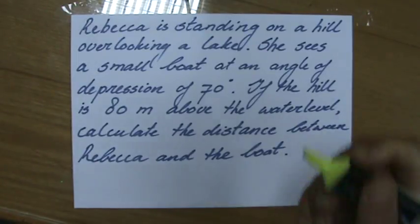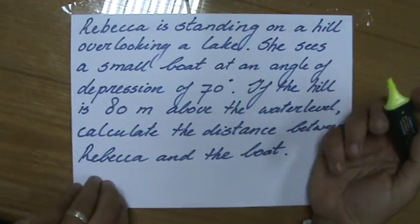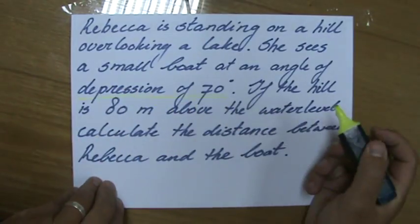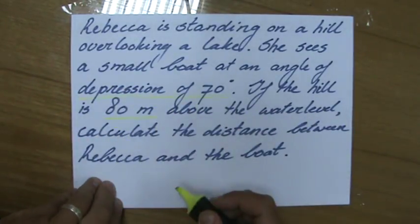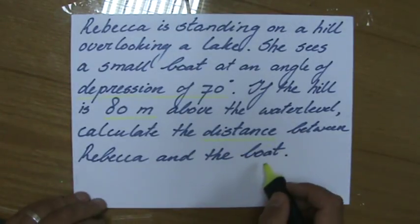I'll quickly highlight the important information. We're talking about an angle of depression of 70 degrees. The hill is 80 meters above the water level and we have to calculate the distance between Rebecca and the boat.